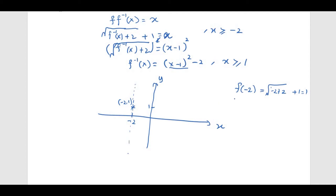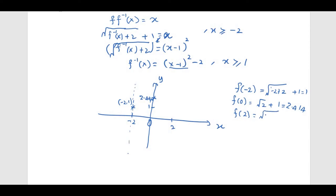To find the y-intercept, substitute x = 0: f(0) = √2 + 1 ≈ 2.414. So we plot the point (0, 2.414). We can also find another point: f(2) = √(2 + 2) + 1 = 3, giving the point (2, 3). We now connect these three points with a curve.